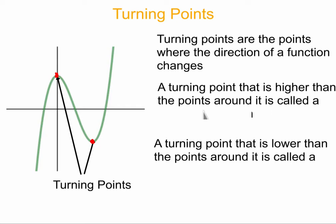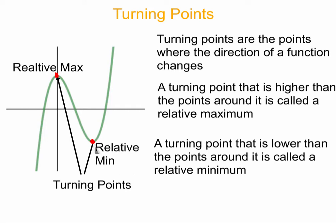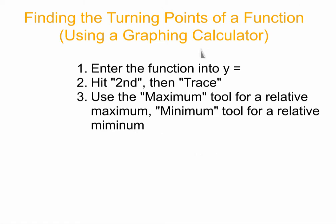If a turning point is higher than all the points around it, it's called a relative maximum. If the turning point is lower than all the points around it, it's called a relative minimum. To find turning points using a graphing calculator, put the function into y equals, look at your graph, hit second trace to bring up the calculate menu, then use the maximum or minimum tool. We'll discuss how to do this in class.